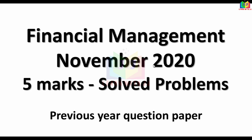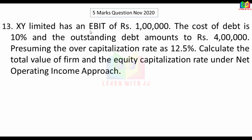This is from the financial management question paper of November 2020. The problem involves an EBIT of Rs. 4 lakh, presuming the overall capitalization rate as 12.5%. Calculate the total value of the firm and the equity capitalization rate under the net operating income approach.